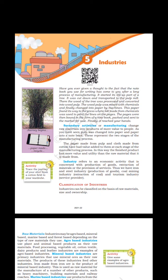The pages were then bound in the form of a notebook, packed and sent to the market for sale, and finally reached your hands. Secondary activities or manufacturing change raw materials into products of more value to people. Pulp was changed into paper and paper into a notebook — these represent the two stages of the manufacturing process. The paper made from pulp and cloth made from cotton have had value added to them at each stage, so the finished product has more value and utility than the raw material it is made from.